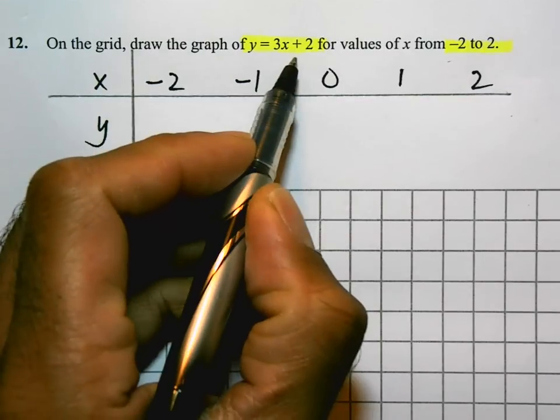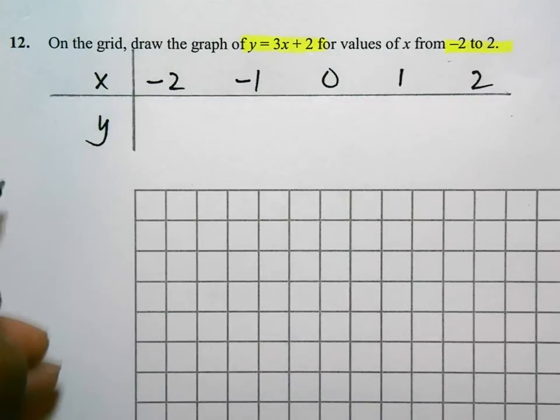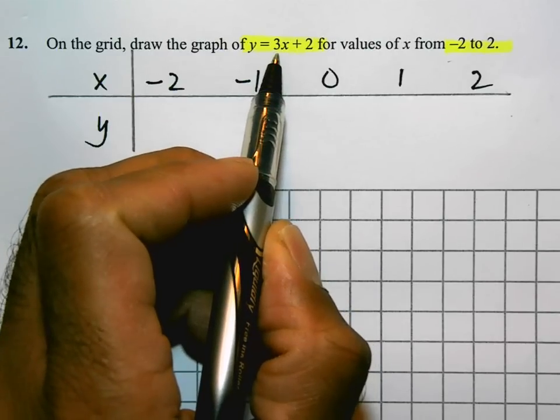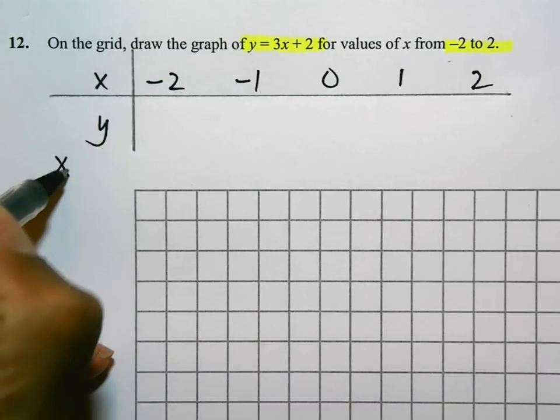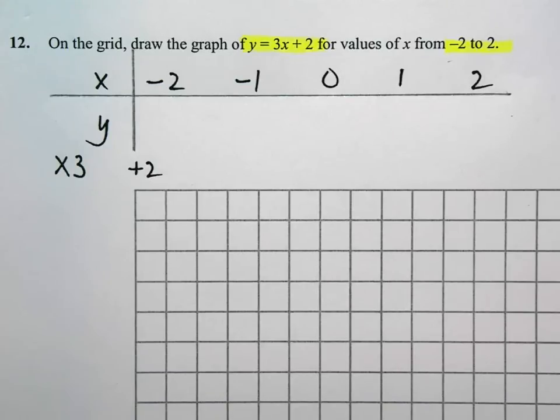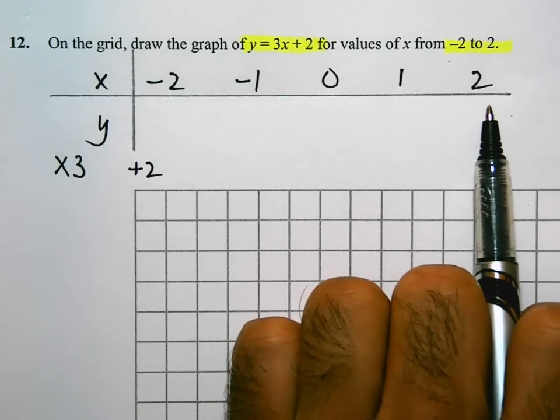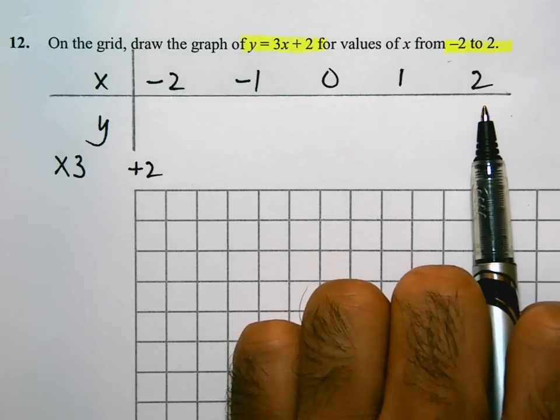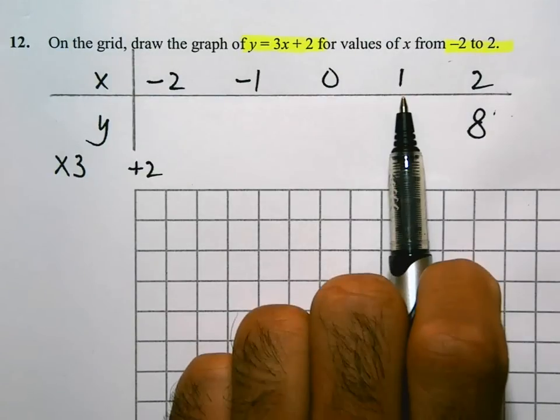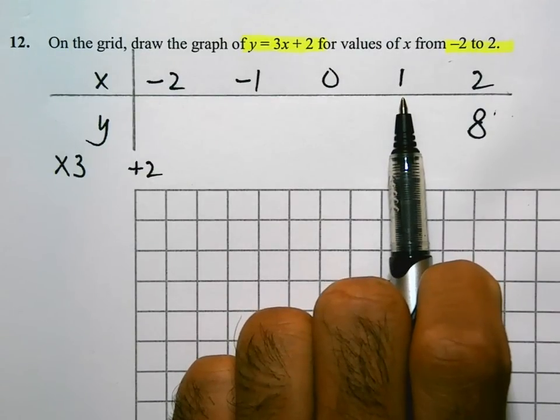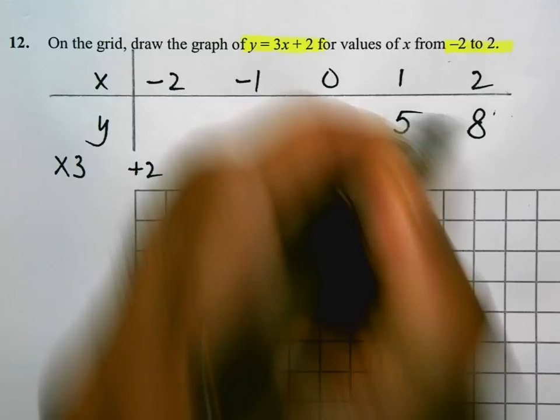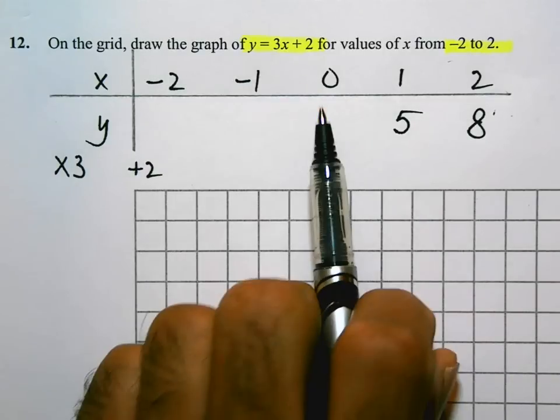So start with x. That means x times 3 and then add 2. What I will need to do in each case is times by 3 and then add 2. So 2 times by 3 is 6, 6 add 2 is 8. 1 times by 3 is 3, add 2 is 5. 0 times by 3 is 0, add 2 is 2.